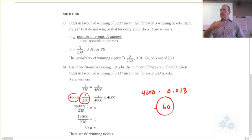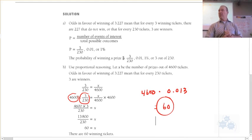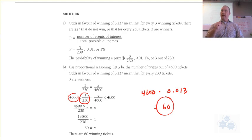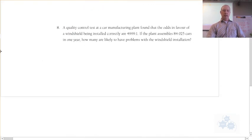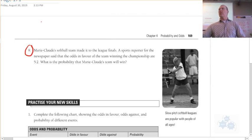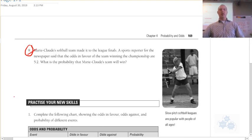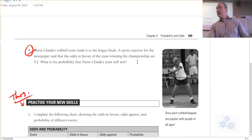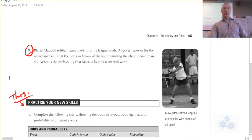This example connects the idea of odds with probability. For today, you should get up to number 9 done — so about seven more questions to complete for the bulk of this class. Tomorrow we'll focus on practice your new skills, and make sure everything is done up to this point.